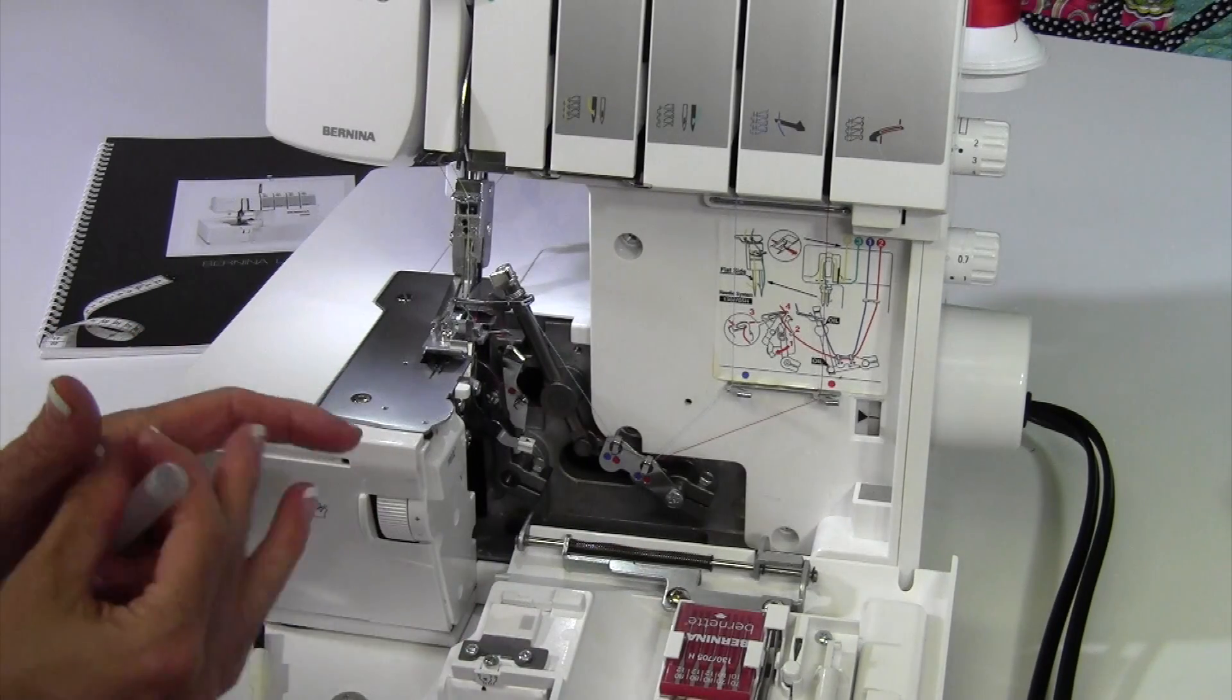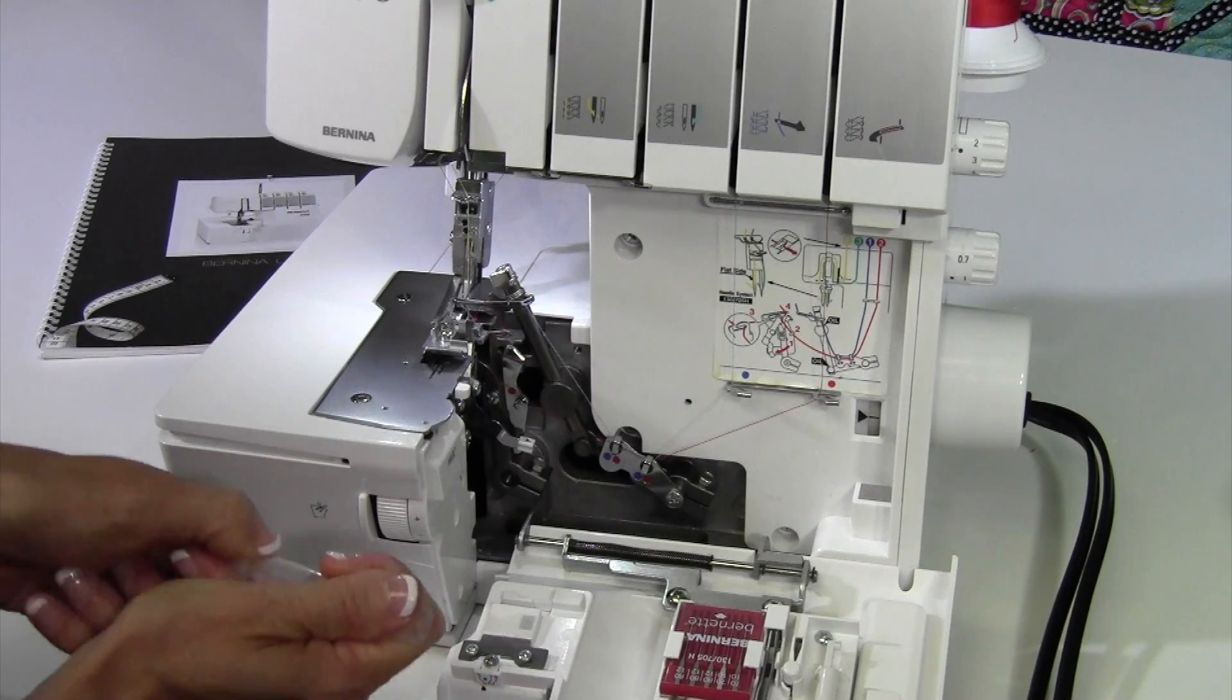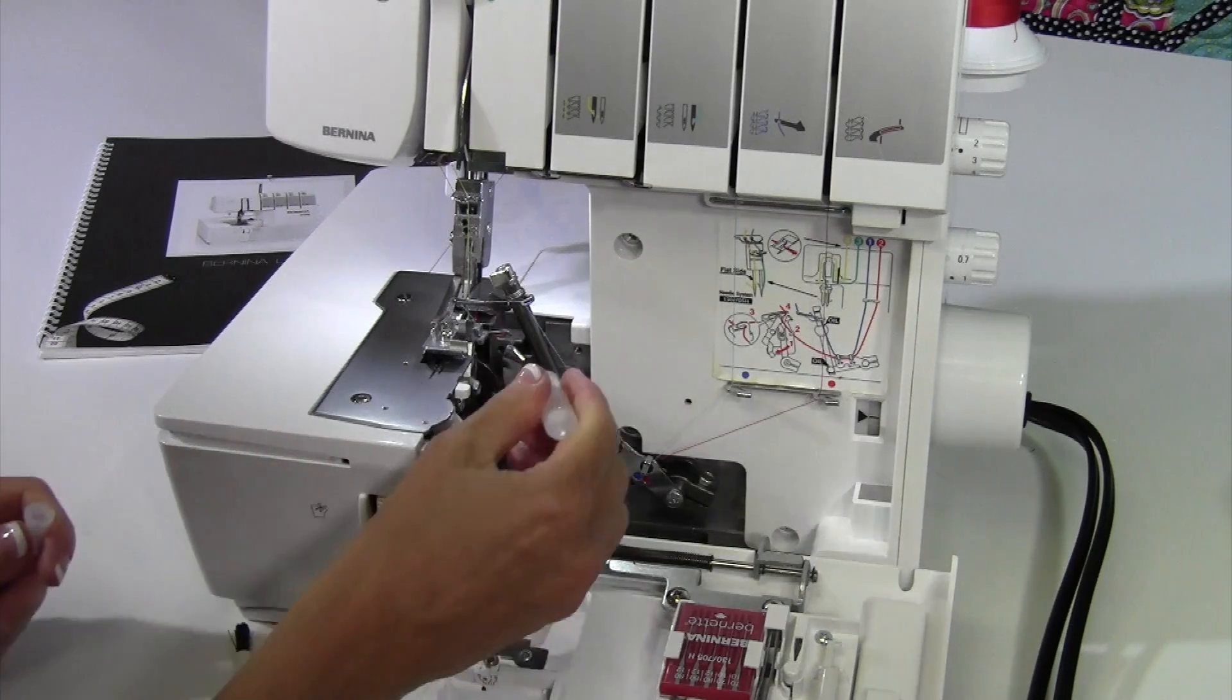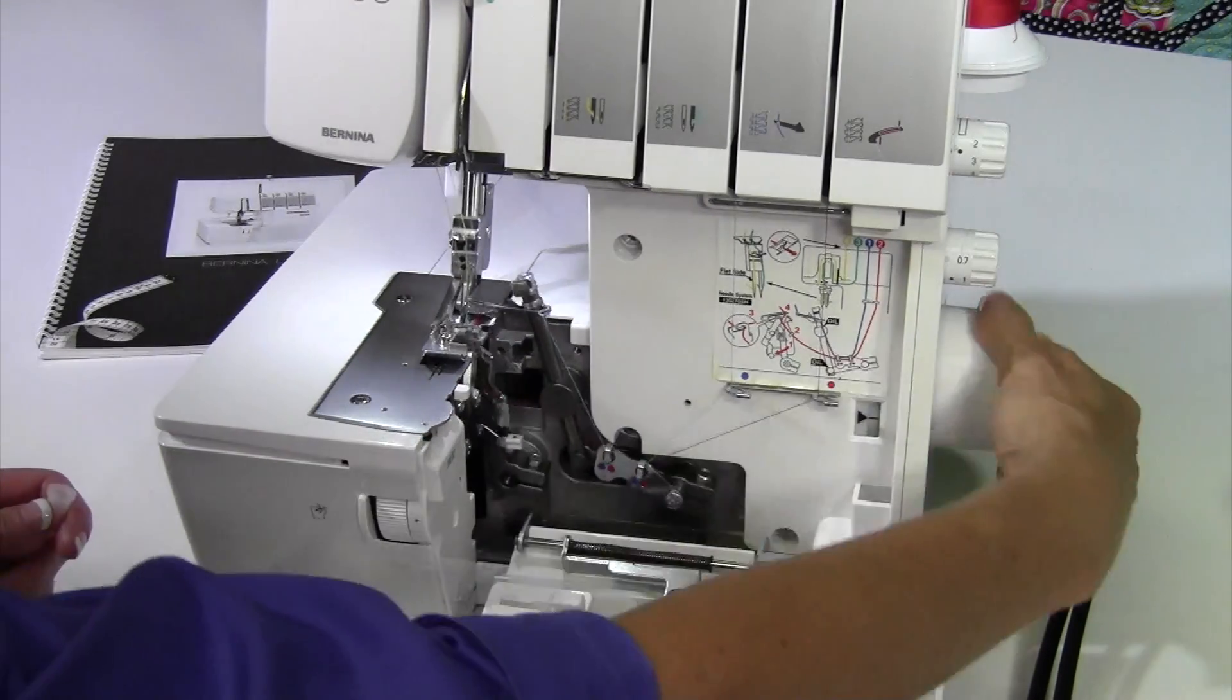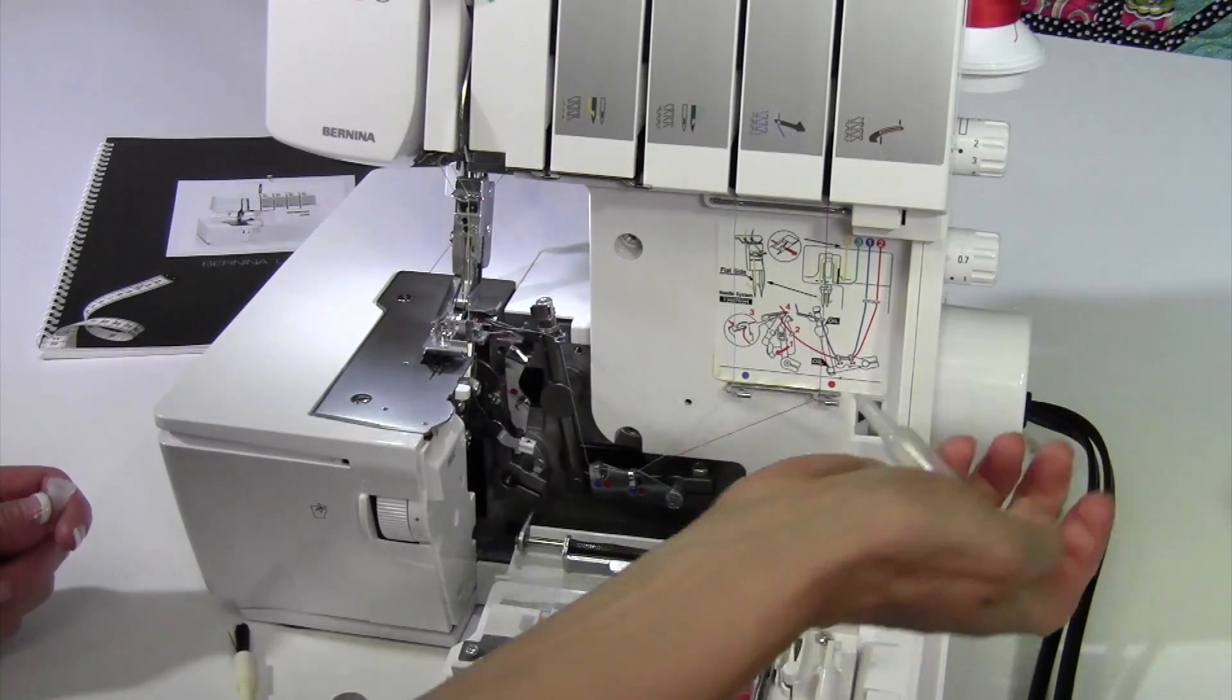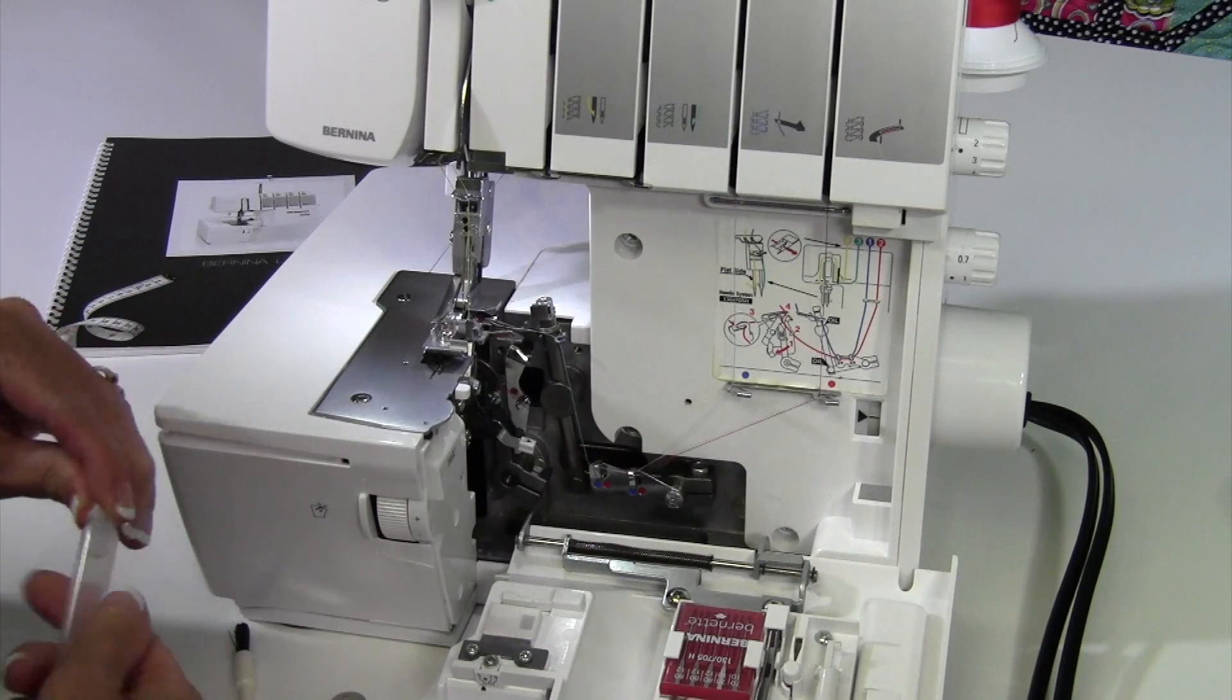That means you're in a constant battle of always cleaning and then reapplying the oil back to those parts. You can just give it a little squeeze in those little areas. Anything that moves on the serger is fair game for a couple drops after you've really given it a nice brushing.